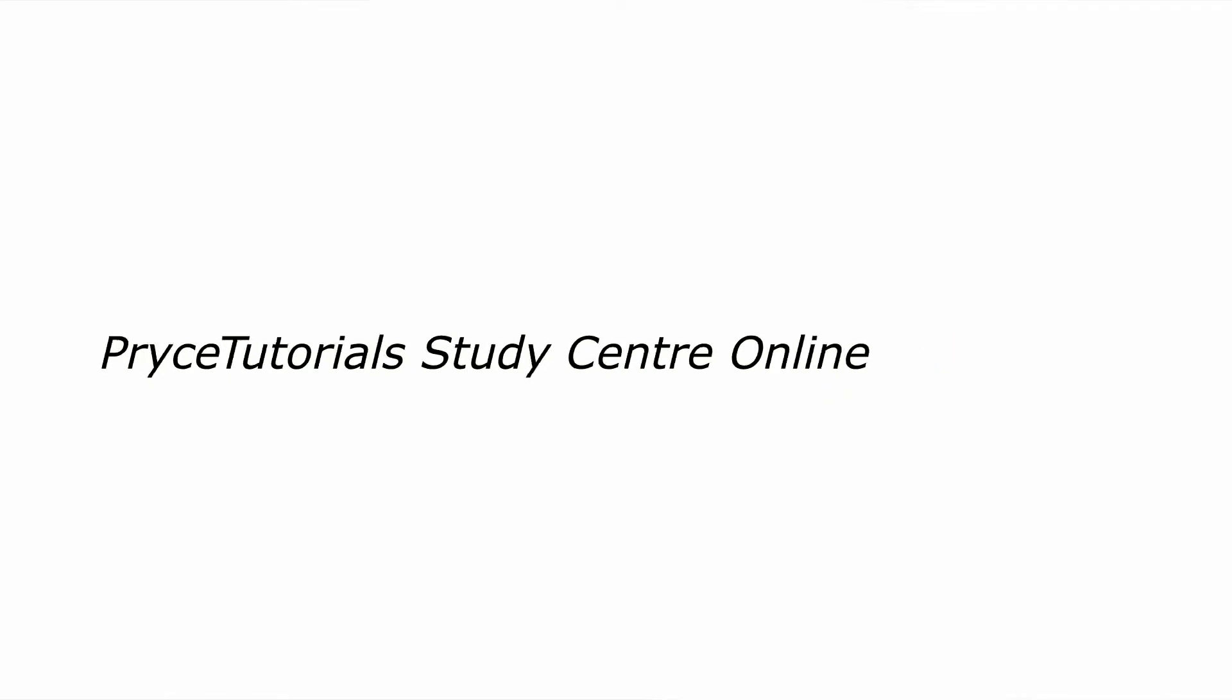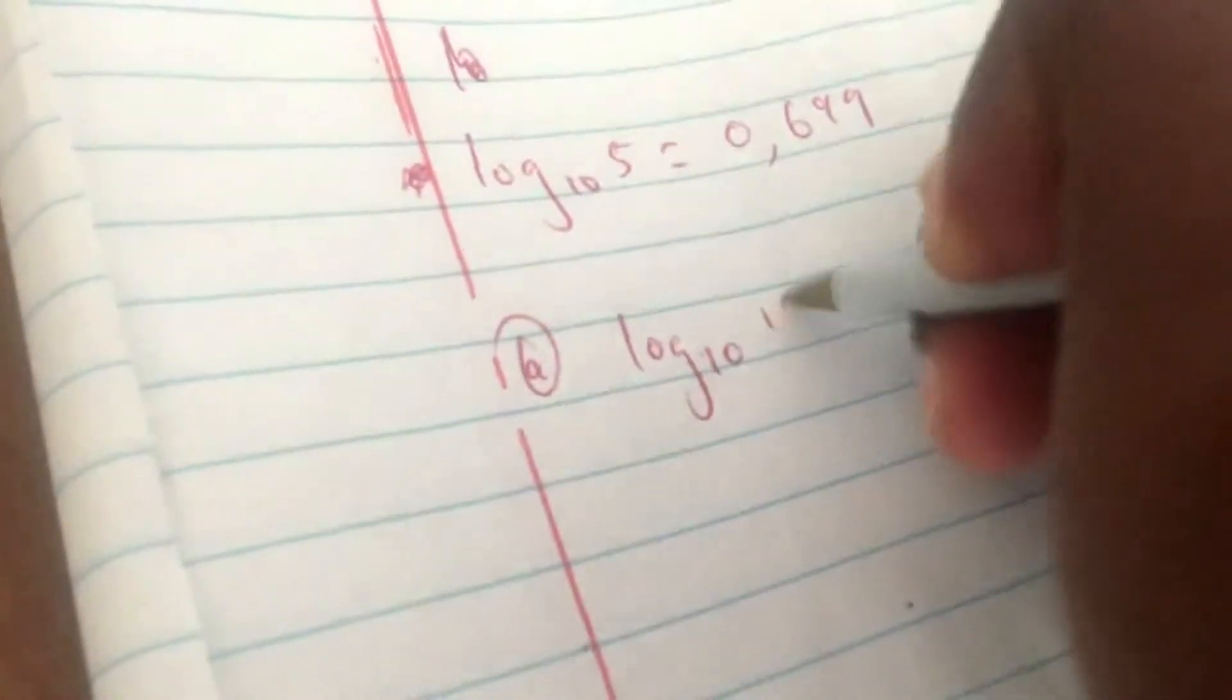You have log base 10 of 5 is equal to 0.699, so this is what you've been given. You're asked to calculate the first part, part a: log base 10 of 125.